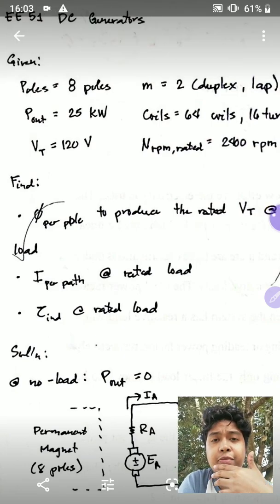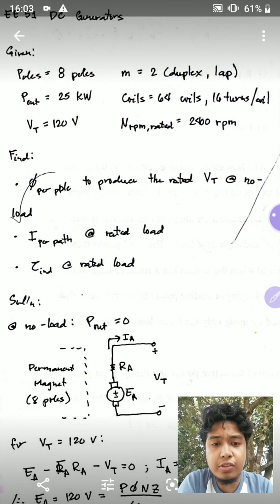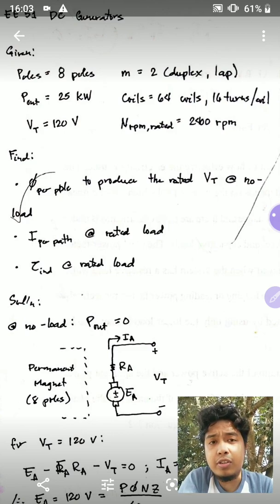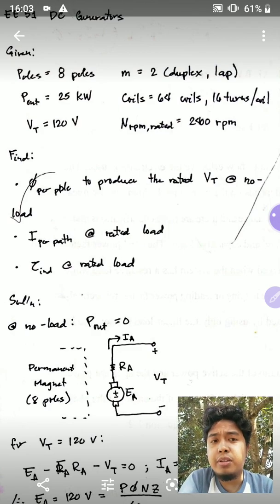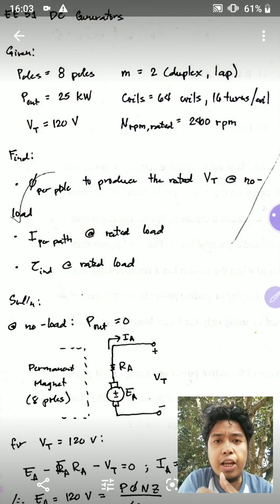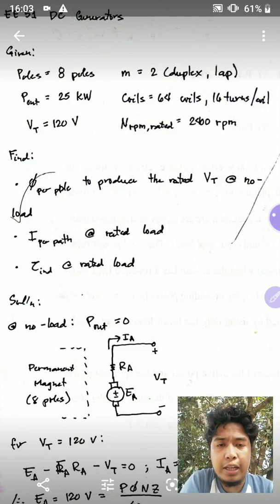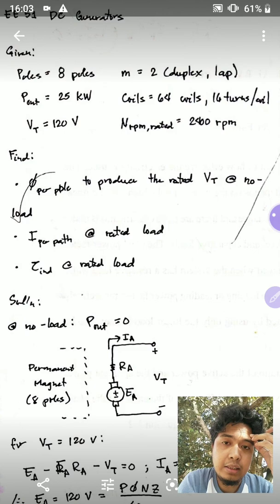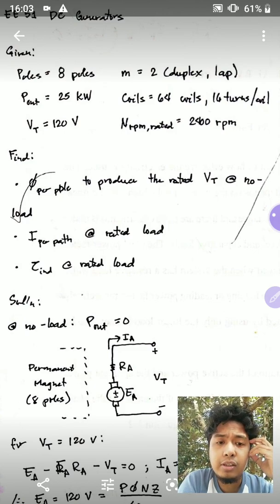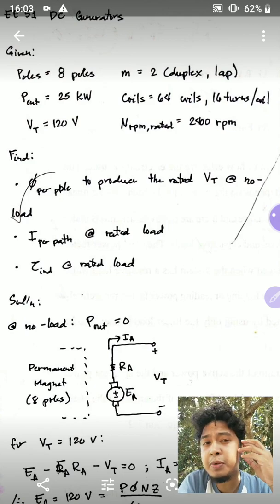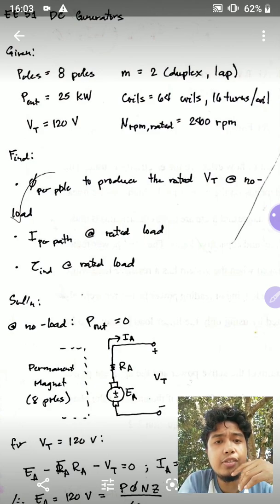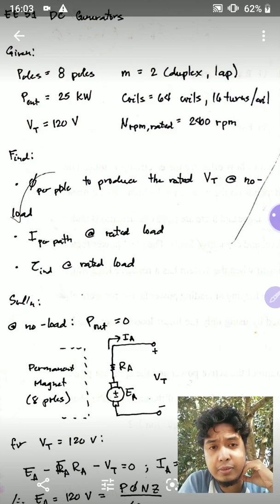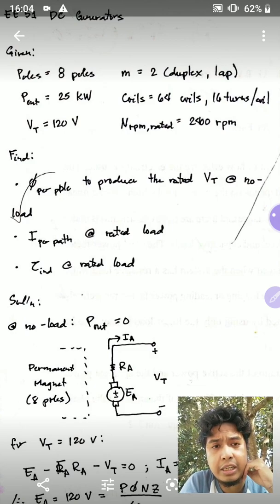Here is an example for DC generators — this one is in your slides. The machine specifications are: 8 poles, so 4 north and 4 south. It has a rated output of 25 kilowatts, which is the electrical output, with a rated terminal voltage of 120 volts. This machine is duplex lap, so you have a multiplicity of 2. It has 64 coils, with each coil having 16 turns, and it's rated to run at 2400 revolutions per minute.